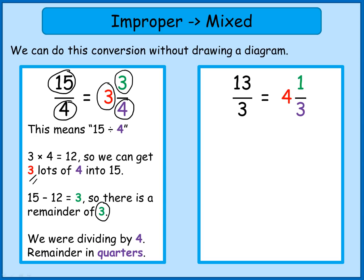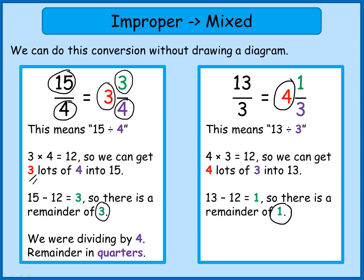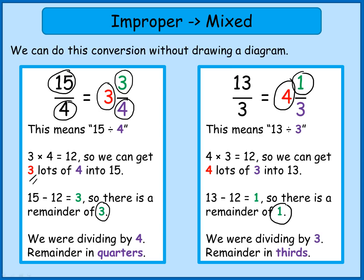Let's look at our other example: 13 over 3, which is the same as 4 and 1 third. So 13 over 3 means 13 divided by 3. How many lots of 3 go into 13? Counting up: 3, 6, 9, 12 — we can get 4 lots of 3 into 13, so the whole number part is 4. Four lots of 3 gives 12, and I had 13 to divide, so I've got a remainder of 1. That remainder of 1 is the numerator of the fraction part, and since I was originally dividing by 3, the denominator stays as thirds. When changing from an improper fraction to a mixed number, the denominator never changes.